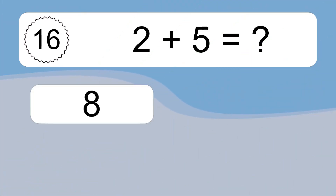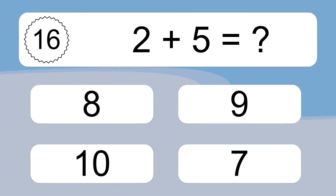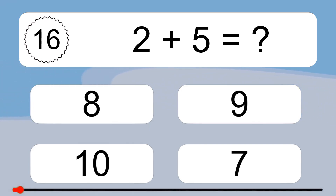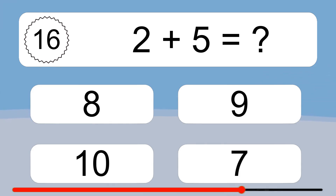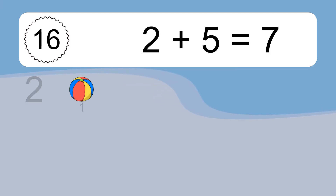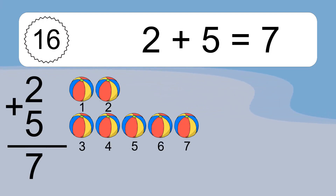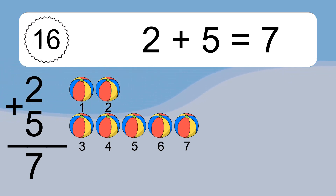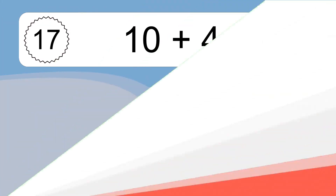2 plus 5 equals what? 2 plus 5 equals 7. Let's count it: 1, 2, 3, 4, 5, 6, 7.